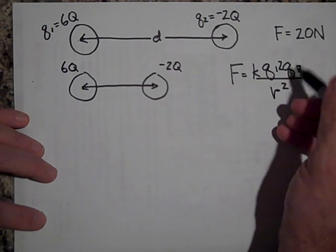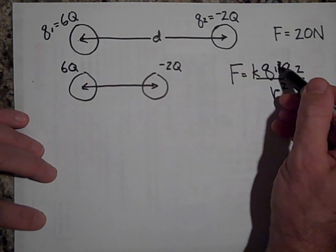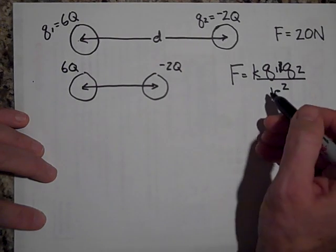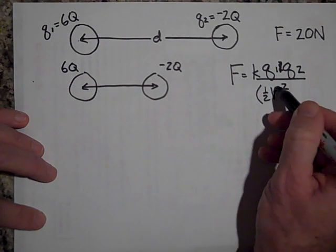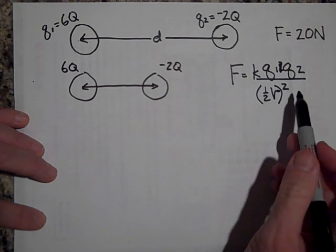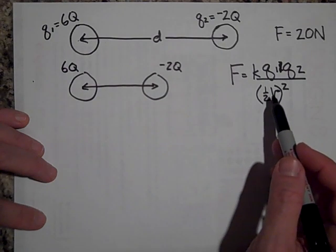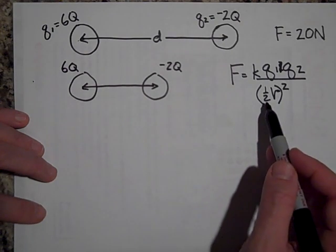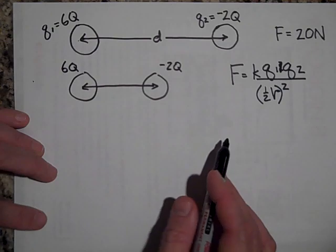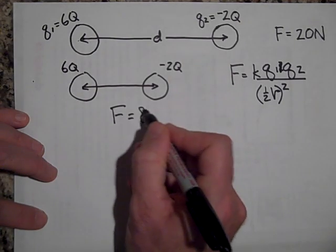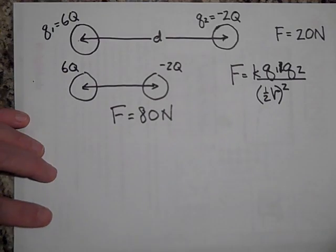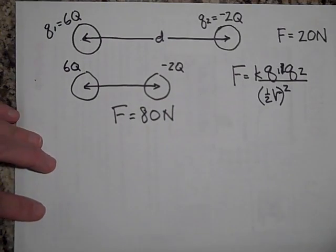If you look, let's get rid of that 2. And we're going to put a half here. But that half goes in a parentheses there. So when I square this, this is going to give me 1 quarter R squared. And 1 quarter being a denominator is like making the force 4 times greater. So the new force here will be 80 Newtons. It will be 4 times as great.